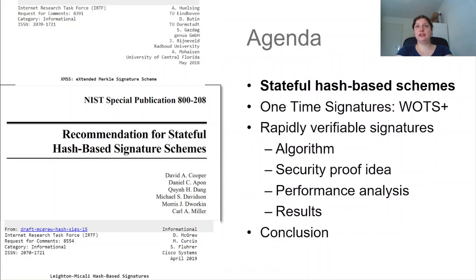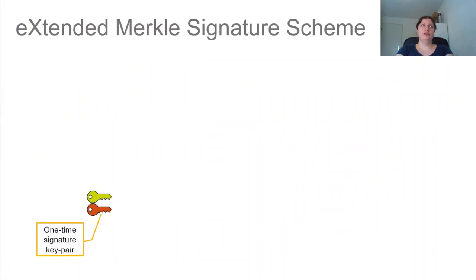So then first, stateful hash-based schemes. So XMSS, or Extended Merkle Signature Scheme, it works as follows. We start from a one-time signature key pair, depicted here down below, where a signer creates one private key, computes the corresponding public key, and can sign one message with it.